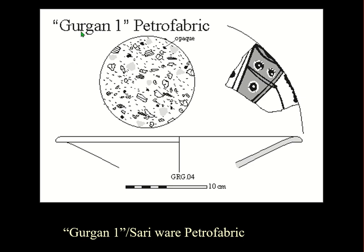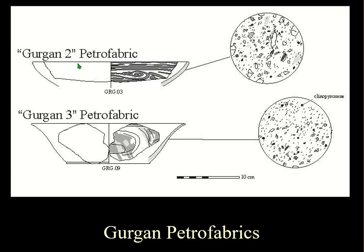I use naming conventions like Jurjan 1, 2, and 3. It doesn't mean they're made there — it means that's where they were sampled. If I was thin-sectioning a lot of pottery from Jurjan including luster wares, probably the first thing I'd define would be a luster ware — Jurjan 1. Here are Jurjan 2 and 3: a slip-painted ware and a splash slip-incised ware. They are distinctive fabrics, though I don't know which one is actually local.